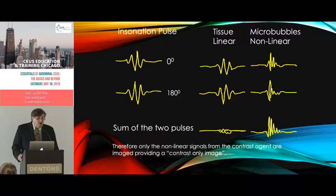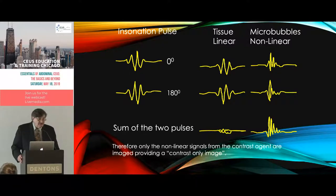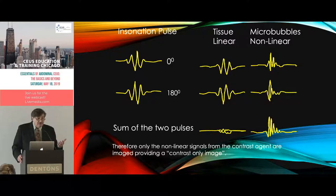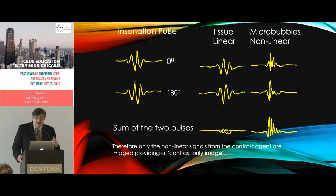With pulse inversion, we send two pulses — one at zero degrees phase and one at 180 degrees phase, so they're out of sync. Tissues always give a linear response, so when these signals 180 degrees out of phase are added together, they cancel each other out and we don't see any background tissue. But because we're using the nonlinear properties of the bubbles, they give different responses, and when we add them together we get signal. Using this technique we get signal from the bubbles and cancel out all background tissue — excellent background suppression, which we really cannot do with CT or MR.